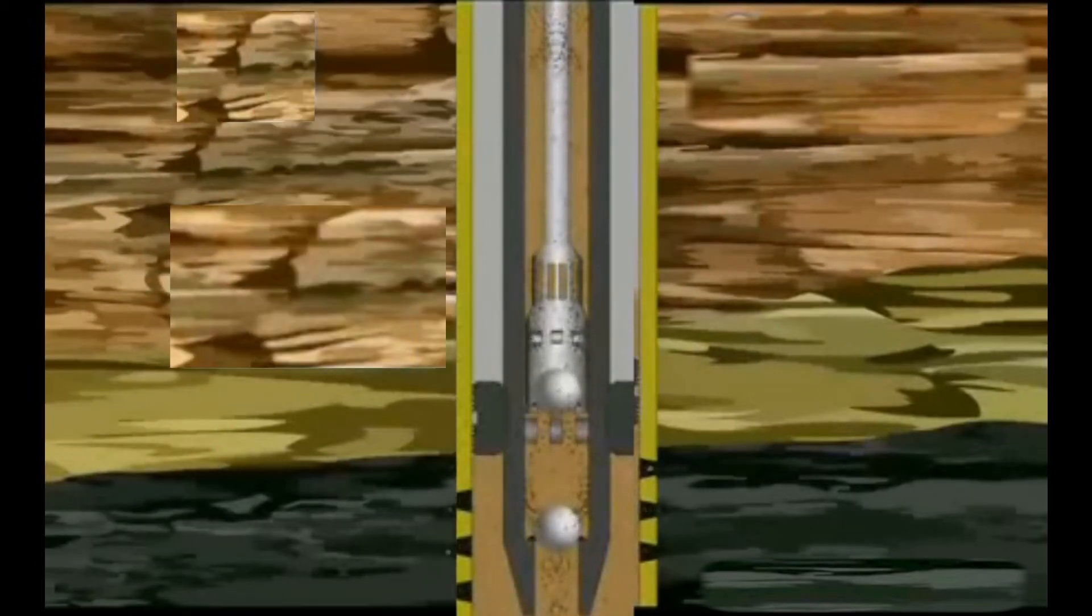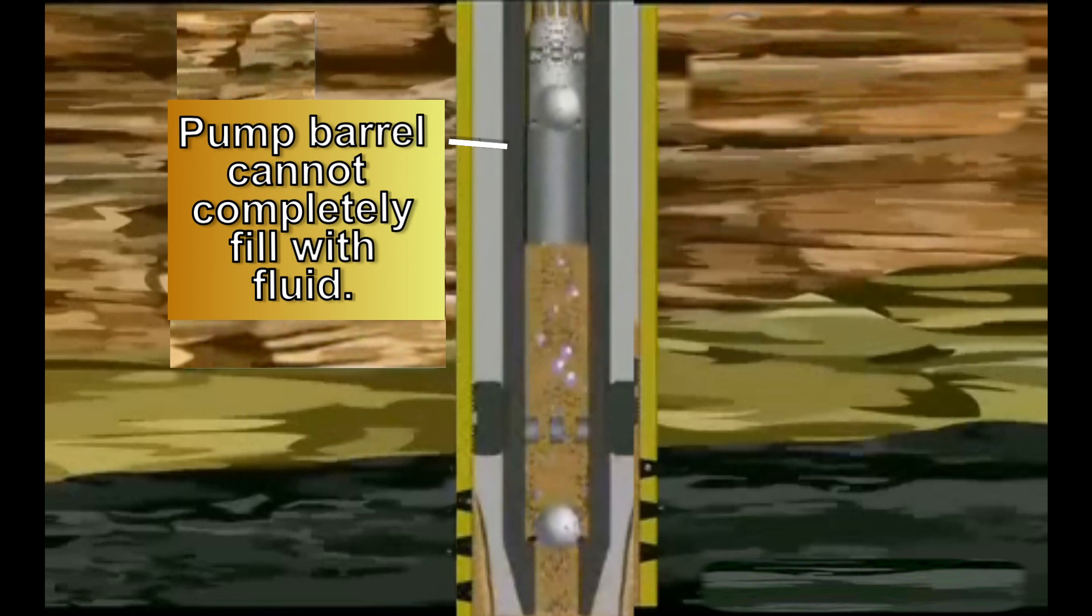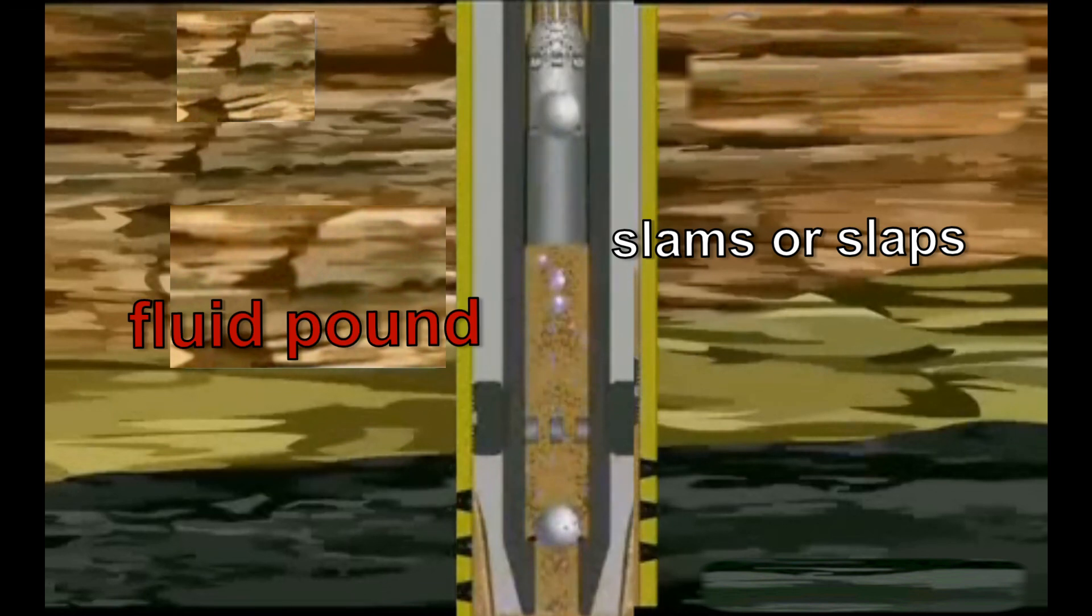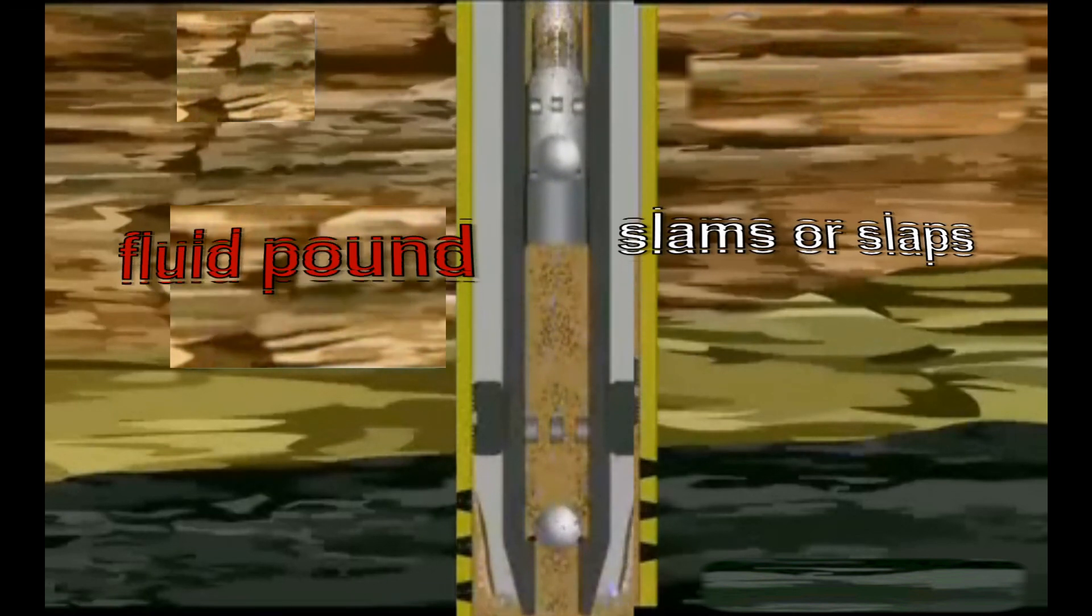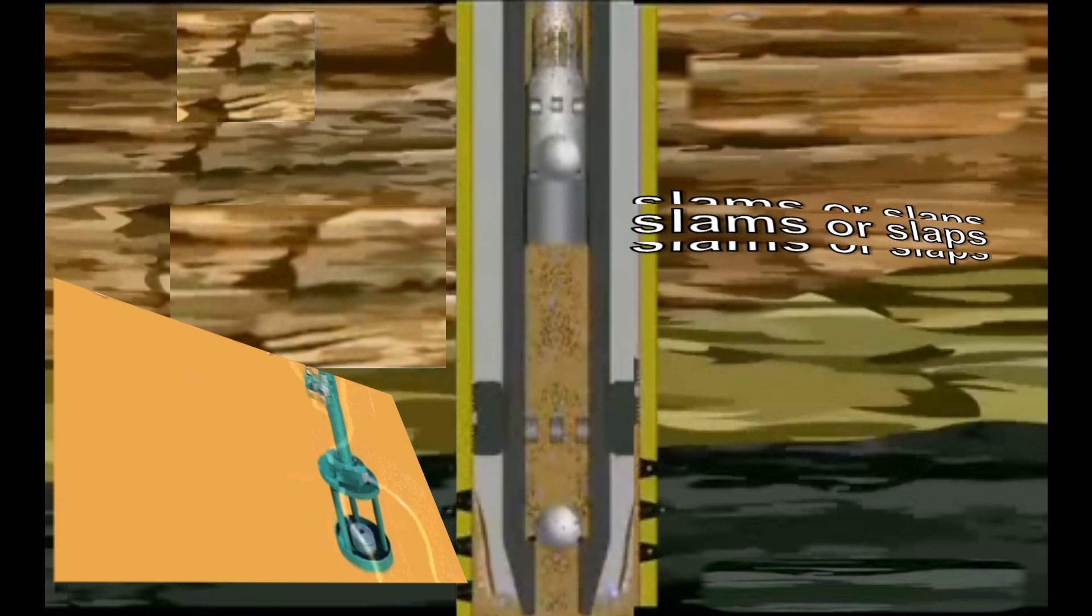Likewise, if there is too little oil, the pump barrel can't completely fill with fluid. This causes a liquid surface to be created inside the barrel so that when the plunger falls, it slams or slaps into this liquid surface in what is known as a fluid pound. The shockwave created when the plunger hits the liquid surface in this fluid pound can damage balls, seats, and rods up and down the string.